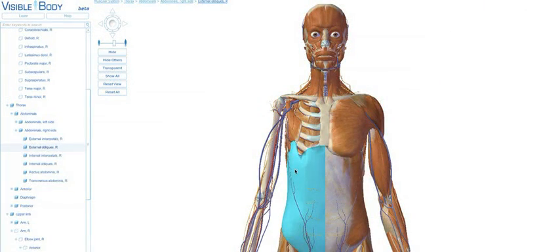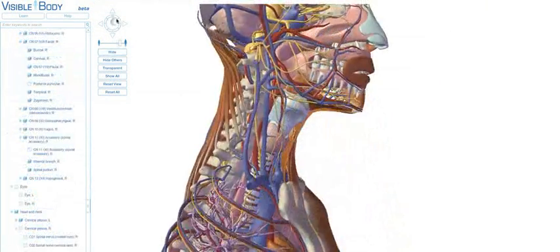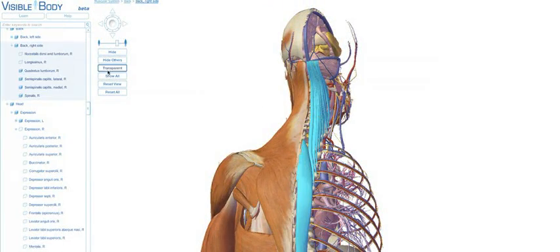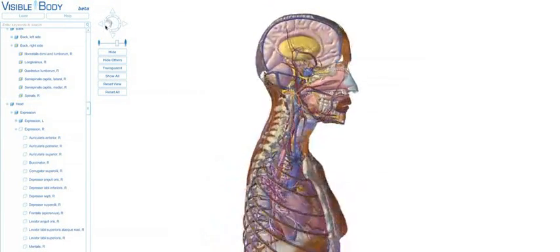Easy to use controls allow users to interact with the model. Users can rotate the model or select and hide anatomical structures to view muscles, then bones and organs.